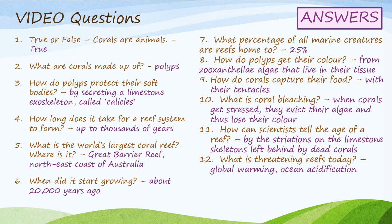Seven: what percentage of all marine creatures are reefs home to? Roughly 25%. Eight: how do polyps get their colour? From zooxanthellae algae that live in their tissue. Nine: how do corals capture their food? With their stinging tentacles. Ten: what is coral bleaching? This is when corals get stressed and evict their algae, thus losing their colour. Eleven: how can scientists tell the age of a reef? By the striations on the limestone skeletons left behind by dead corals. And twelve: what is threatening reefs today? Global warming and ocean acidification.